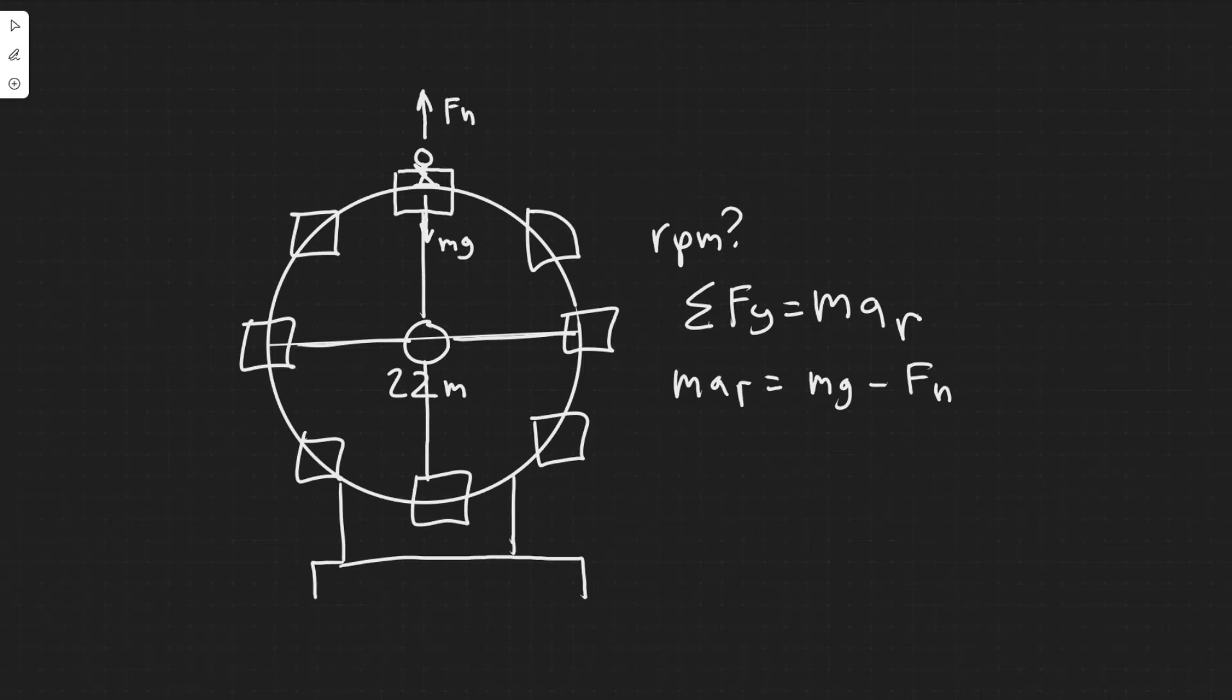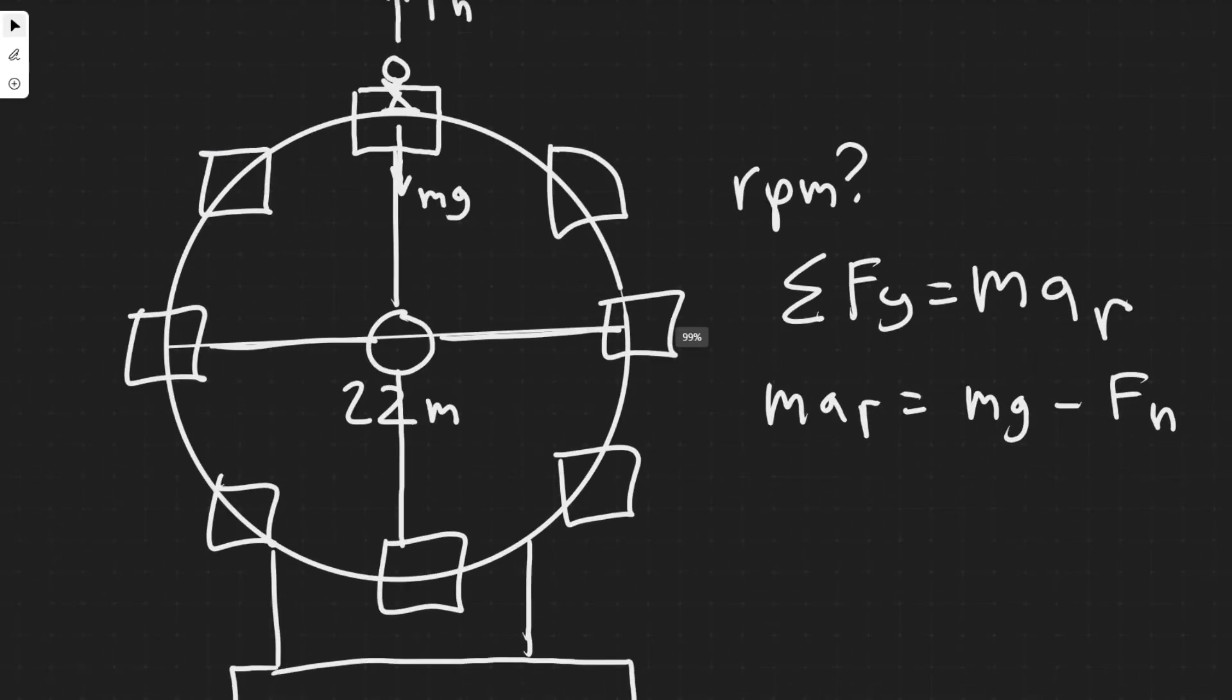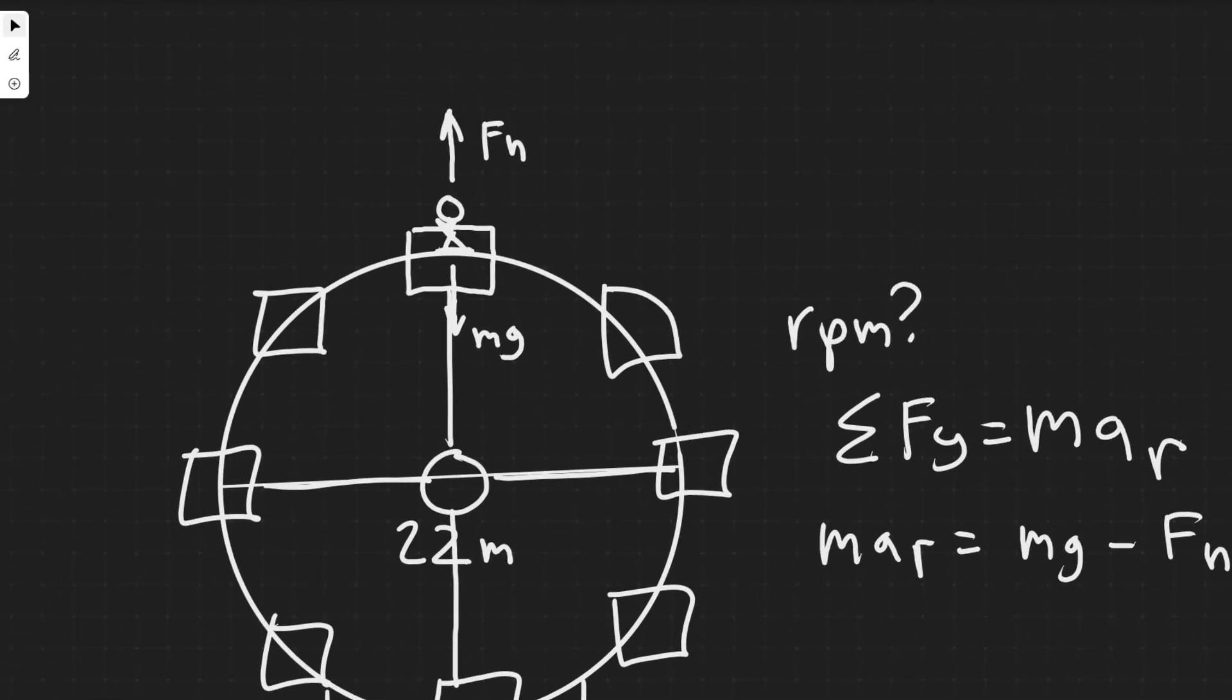But keep in mind what they're saying for this problem. We're trying to find the revolutions per minute in order for the passengers to feel weightless. Now what does it mean for someone to be weightless? It effectively means for this problem that the normal force is going to be zero. So we want to make them feel like they're not even on anything. So there's going to be no normal force pushing up against them, kind of like they're just floating in air.